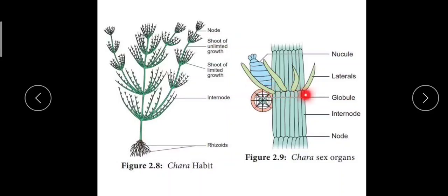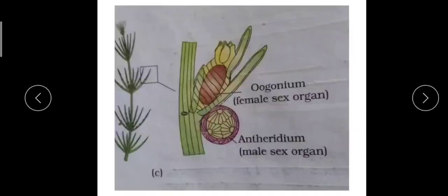The sex organs are born on the nodes of short laterals. These are the short laterals, these are the nodes, and the region between two nodes is called the internode. The nucule is always found above and globule is found below the nucule. The globule, or anthridium, is a large spherical orange-red colored structure.